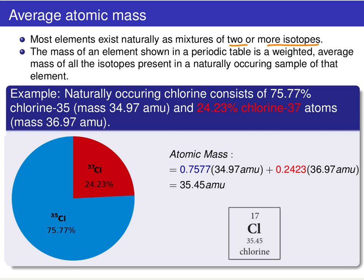This mass on the periodic table is an average, but more specifically it's a weighted average — a weighted average mass of all the isotopes that occur for that element. Let's take a look at chlorine as an example. Chlorine has a mass of 35.45 on the periodic table. This average mass is the result of two naturally occurring isotopes: 75.77% chlorine-35, which has a mass of 34.97, and 24.23% chlorine-37, which has a mass of 36.97.